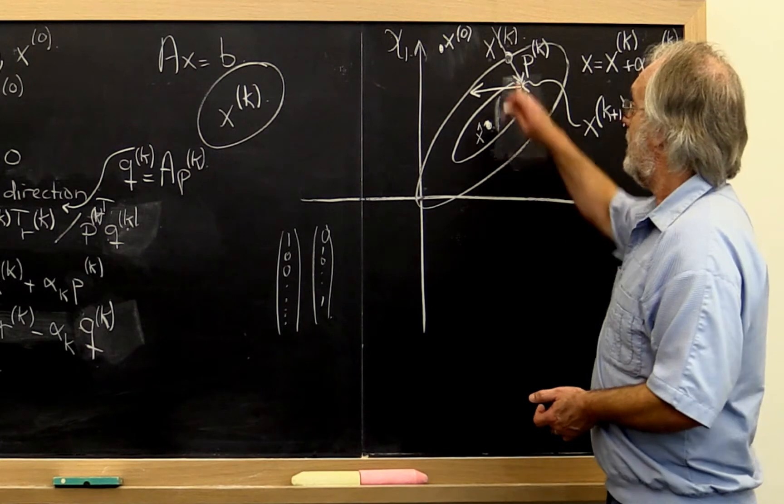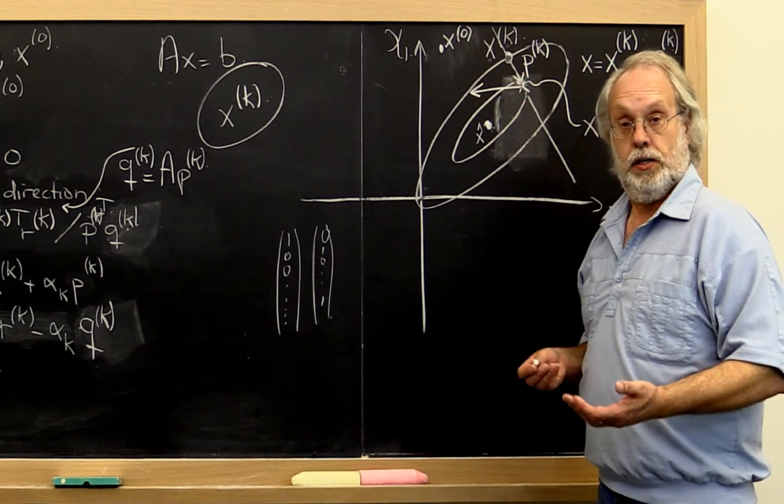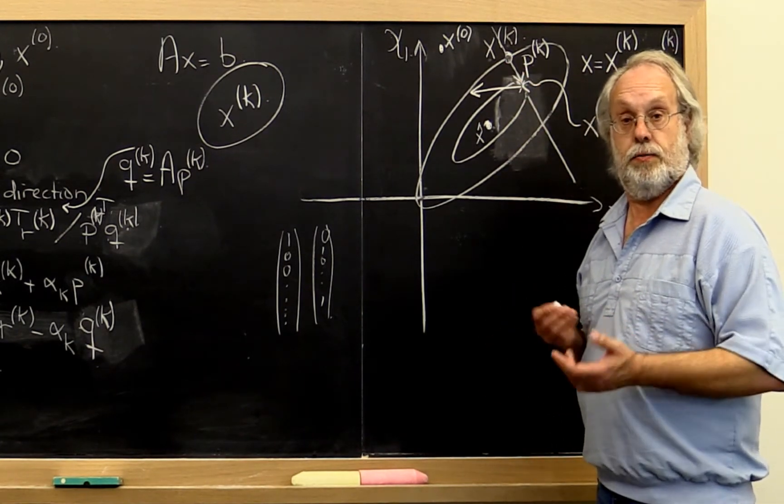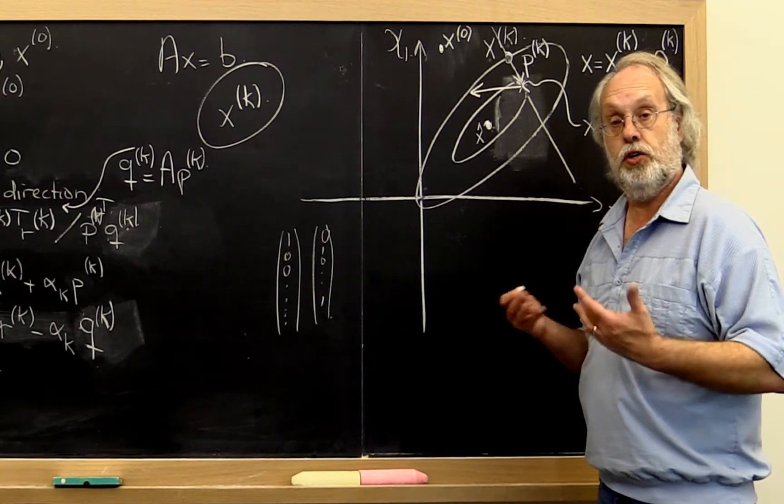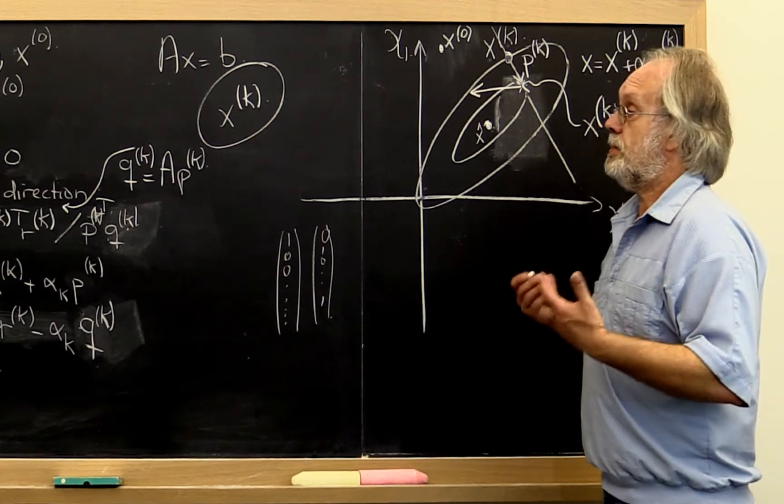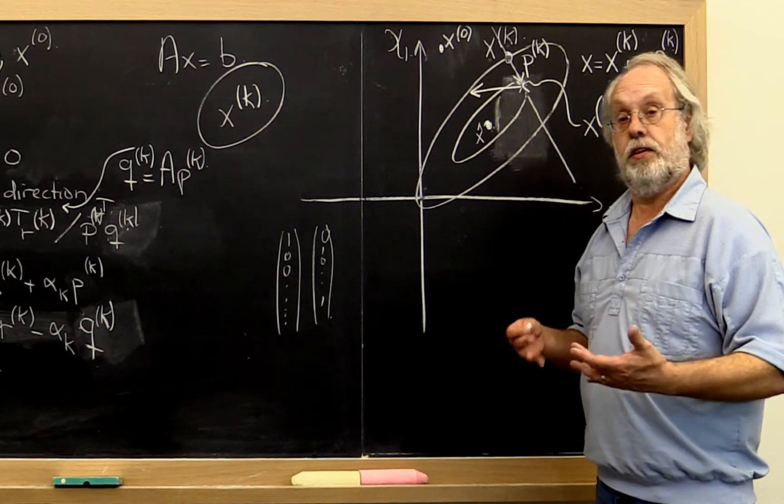Well, that direction actually has a name. It's called the steepest descent direction. So if we do that, we end up with something known as the method of steepest descent.